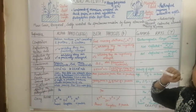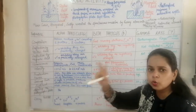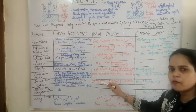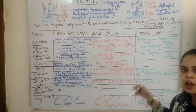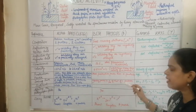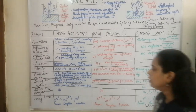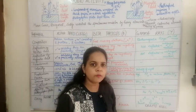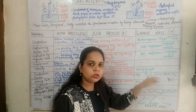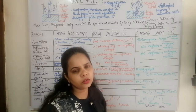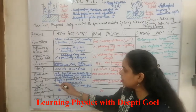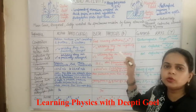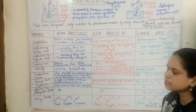Since the beta particle has only one negative charge compared to the alpha particle's two positive charges, its ionizing power is 100 times less than that of the alpha particle. The ionizing power of gamma rays is also one-hundredth that of beta particles. Therefore, the alpha particle's ionizing power is 10,000 times more than gamma rays and 100 times more than beta rays.